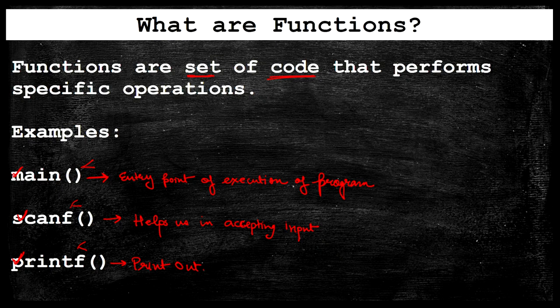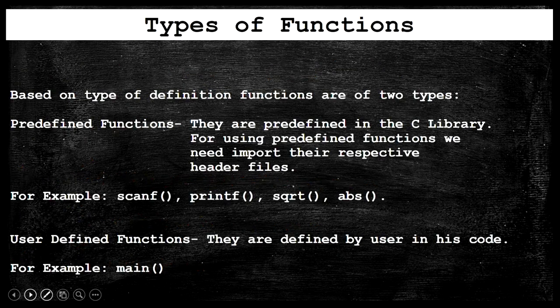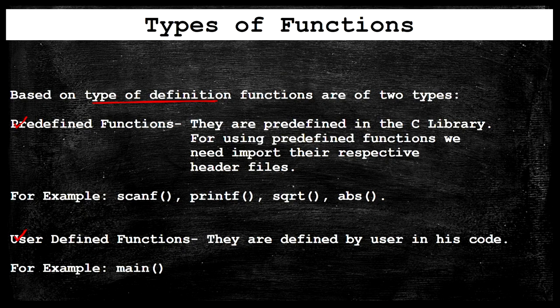Now let's see what types of functions are available in C or any other programming language. We have two types: one is the predefined function and the other is the user-defined function. This division is based on the type of definition — whether it is predefined or user-defined.